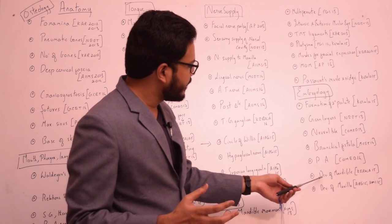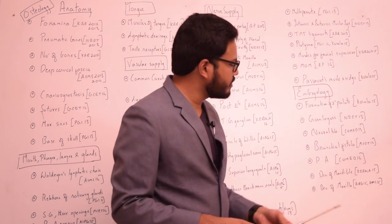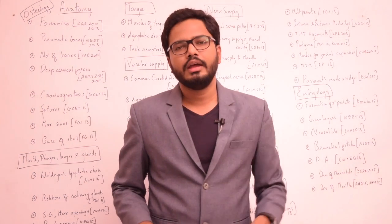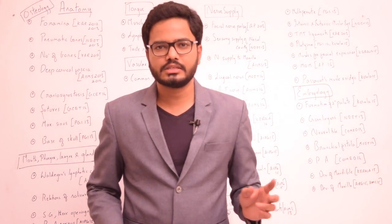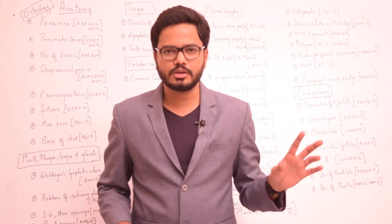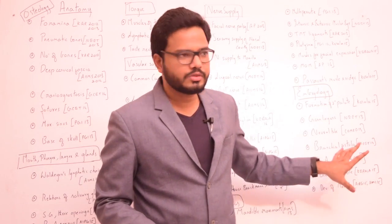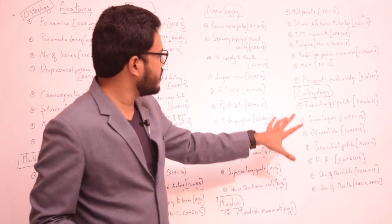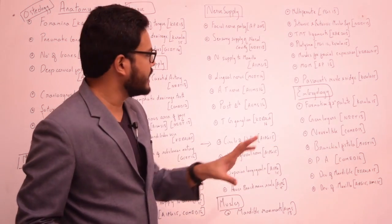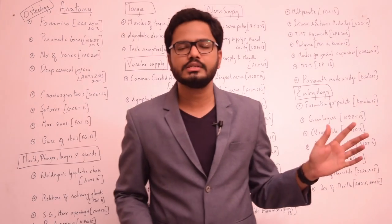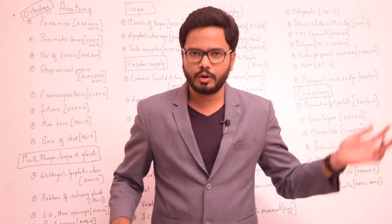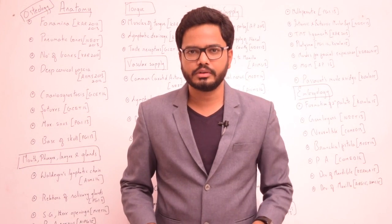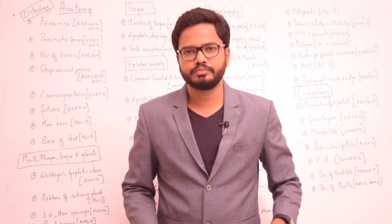We also have several questions from formation of the secondary palate, various germ layers and their derivatives — ecto, endo, and mesoderm — neural tube, branchial fistula, pharyngeal arches, and development of mandible as well as maxilla. So this is the overview of various important topics in Anatomy. Thank you.